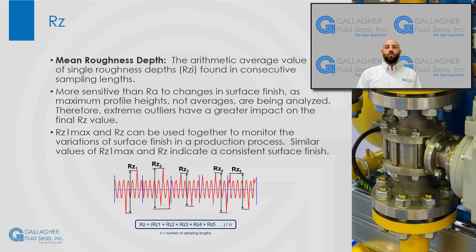RZ, or mean roughness depth, is the arithmetic average value of the multiple Rzi values that are found in the consecutive sampling lengths that encompass the evaluation length. The below illustration depicts the proper calculation for defining RZ. RZ is more sensitive than RA to changes in surface finish, as maximum profile heights, not averages, are being analyzed. Therefore, extreme outliers have a greater impact on the final RZ value. RZ1max and RZ can be used together to monitor the variations of surface finish in a manufacturing process — similar values of RZ1max and RZ indicate a consistent surface finish.